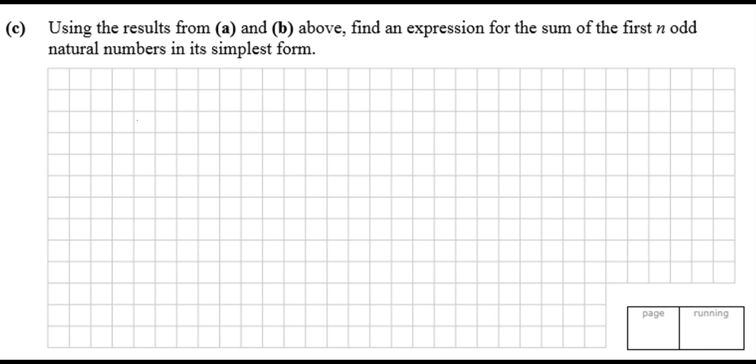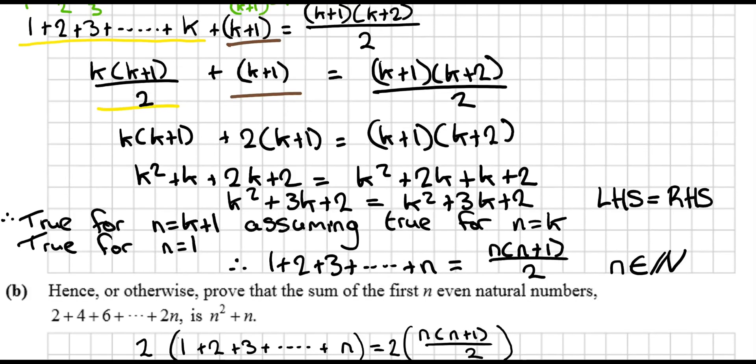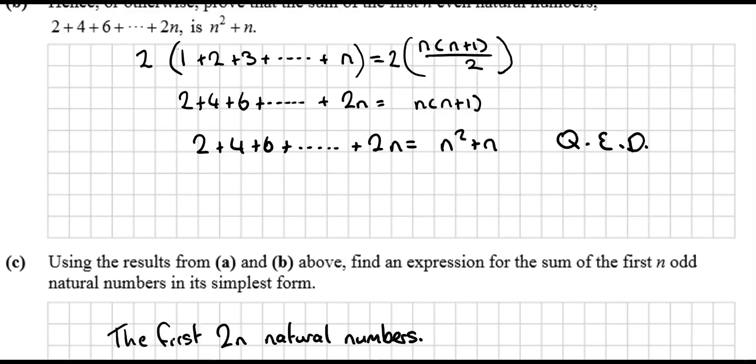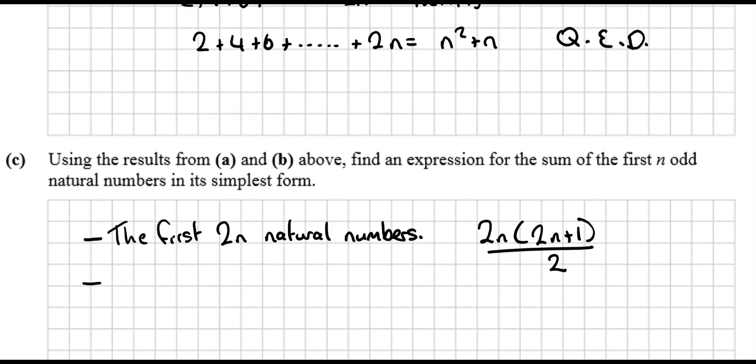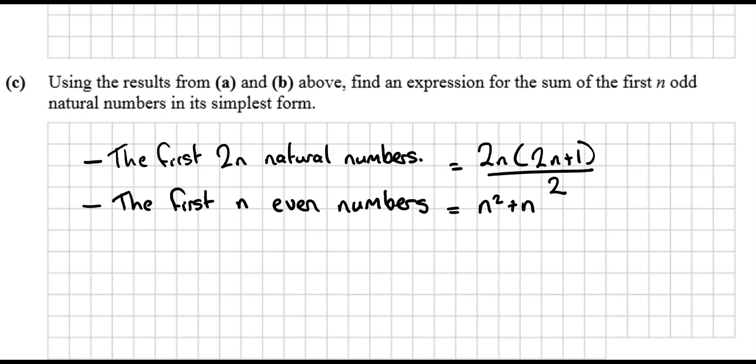So, looking at the third part of the question then, this is where the question gets a little bit strange. We say we have the first 2n natural numbers. Now, what does the sum of the first 2n natural numbers look like? Well, this was the sum of the first n natural numbers. So, the sum of the first 2n natural numbers would be that with 2n subbed in. So, this would be 2n by 2n plus 1, all over 2. And if we take away the even natural numbers, but what were the even natural numbers? The first n even numbers, which is n squared plus n.